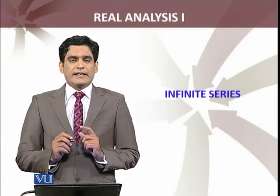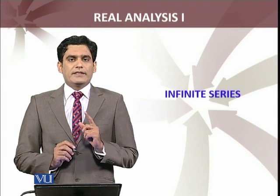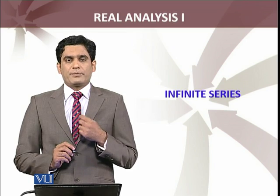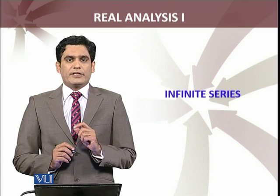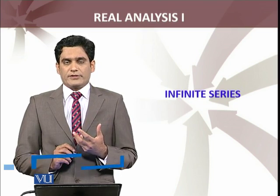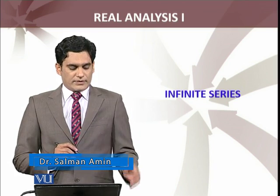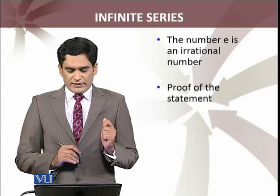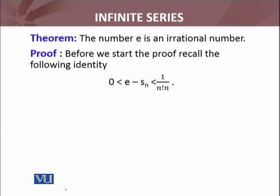We will continue discussing the irrational number e. Now I am going to prove that e is an irrational number. From previous discussions I always used that e is an irrational number without proving it. We are now at that stage to give the formal proof of this statement, which will use our previous results.